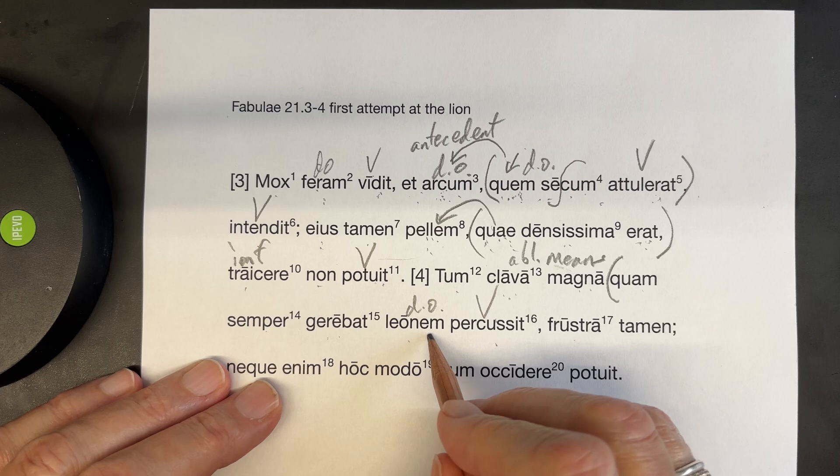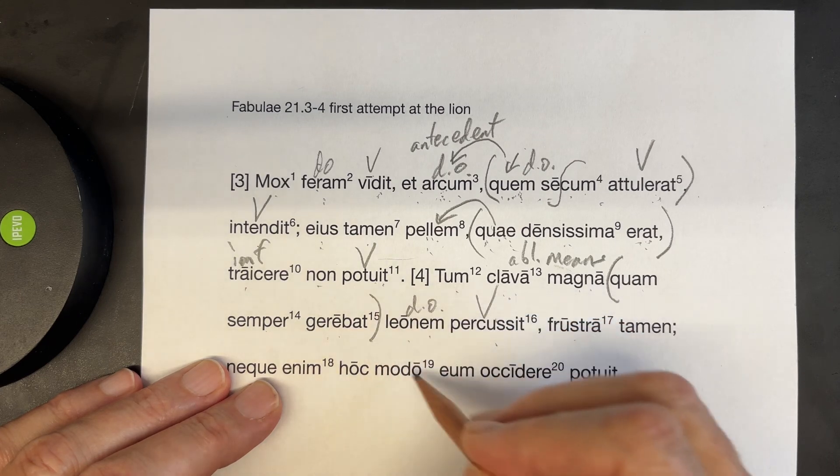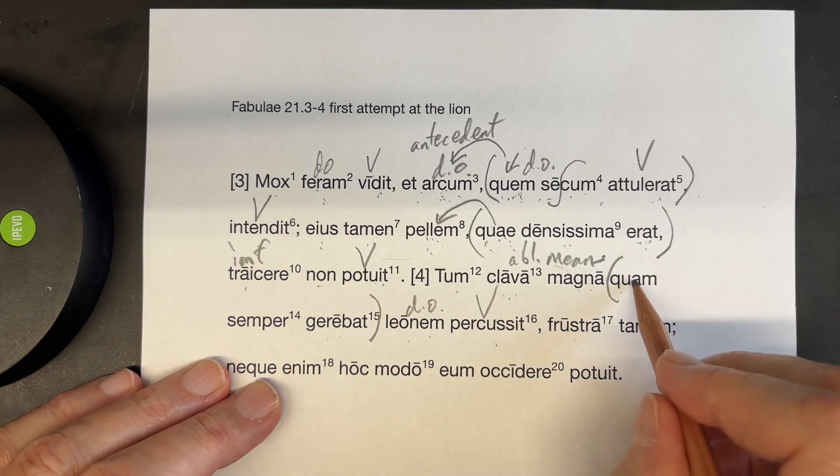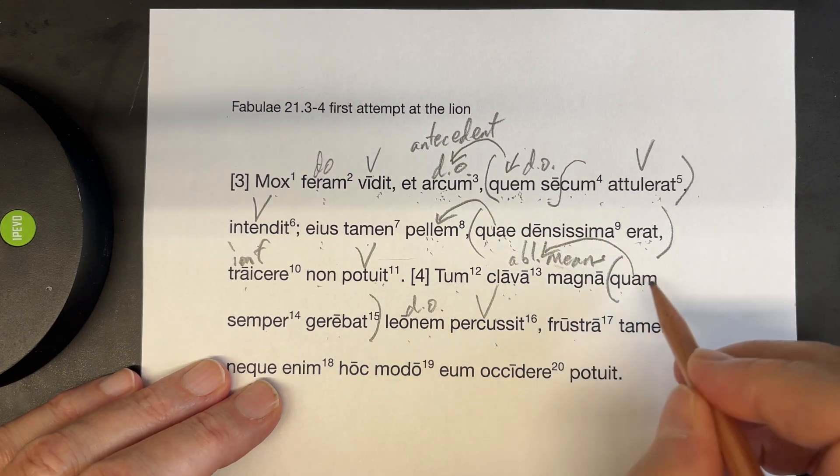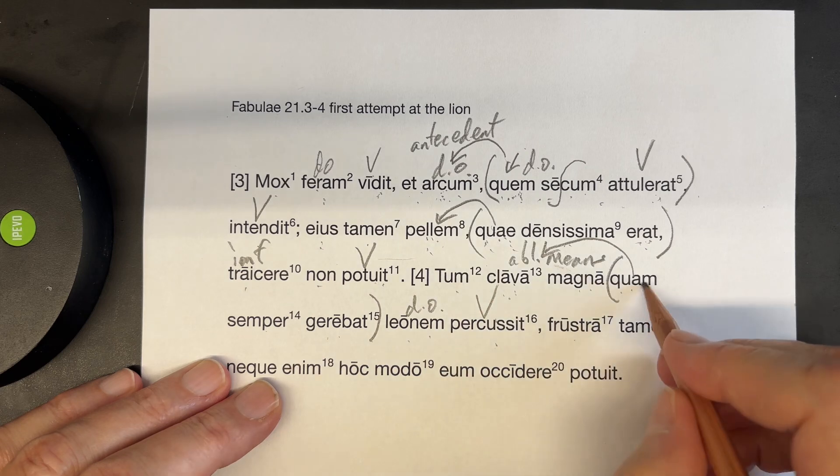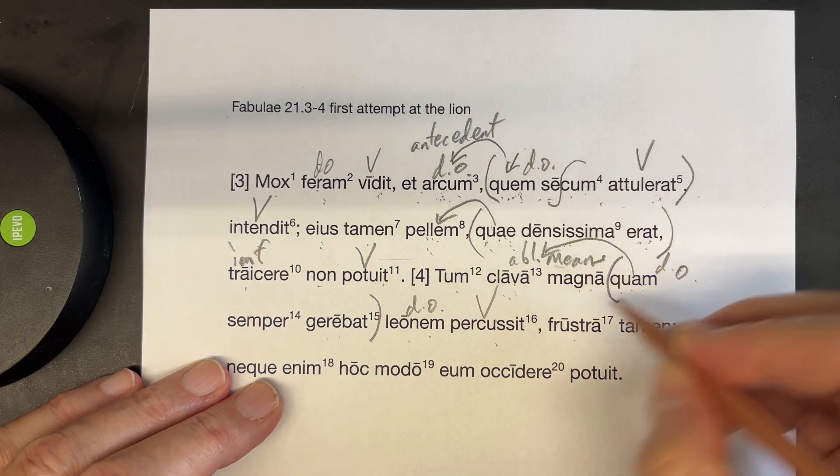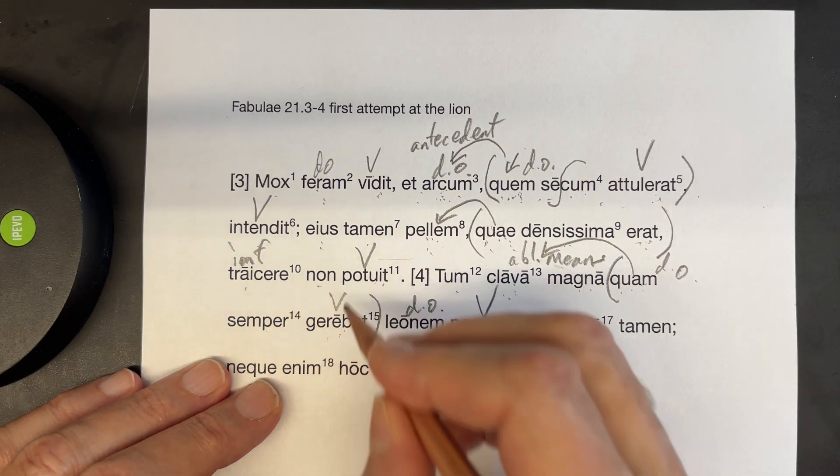Here's your verb, your direct object. Here is the relative clause. Quam refers to the clava. So, feminine, singular. And it's the direct object of the verb geribat.